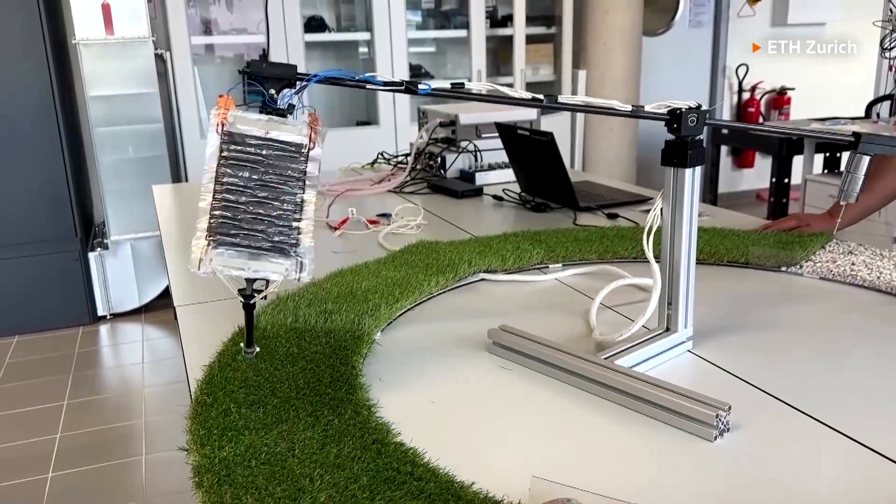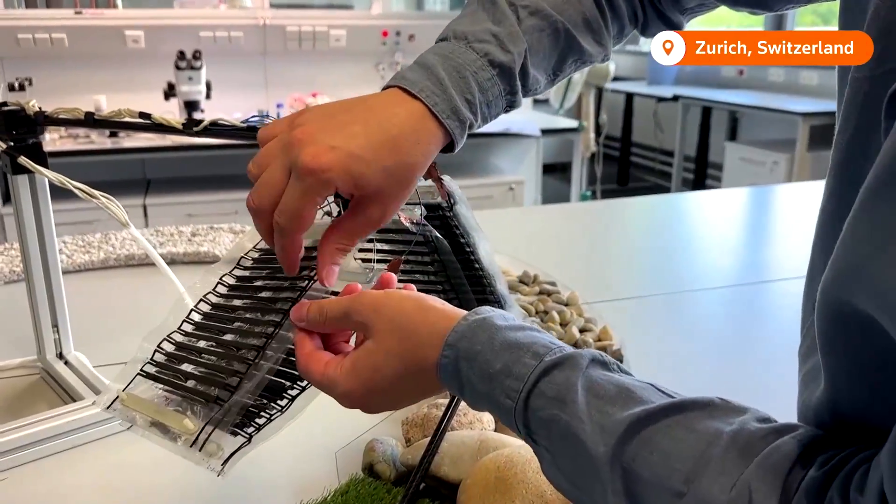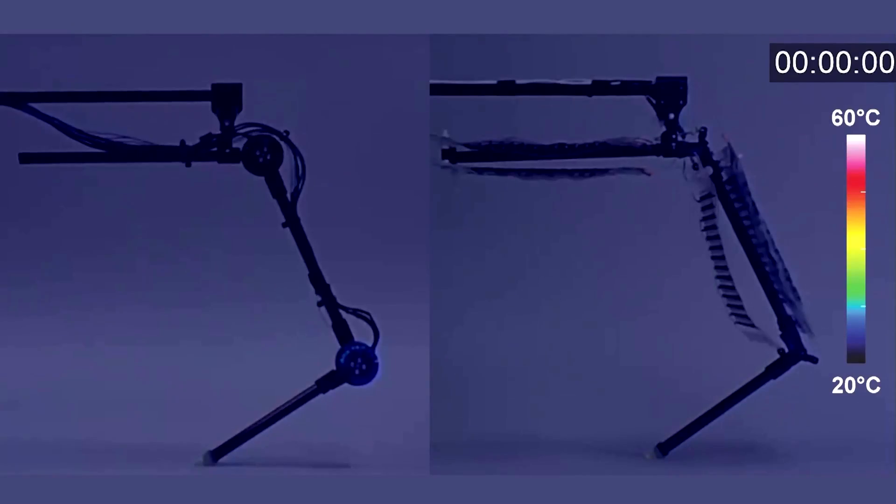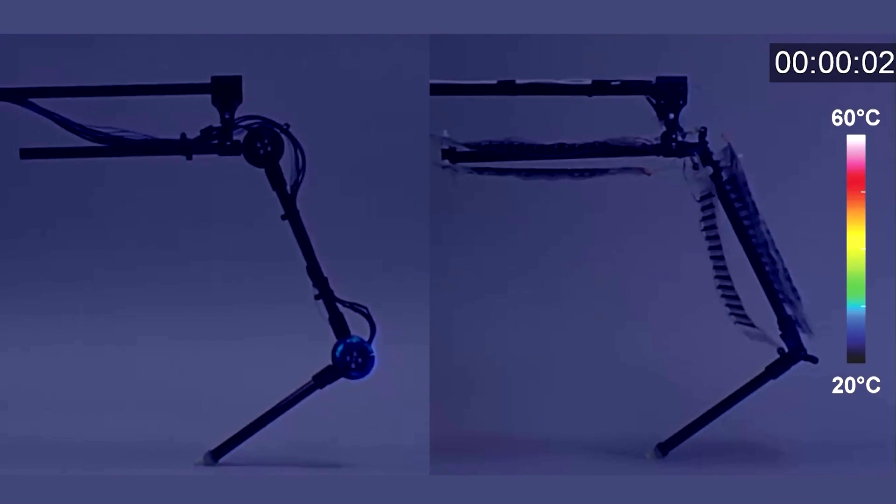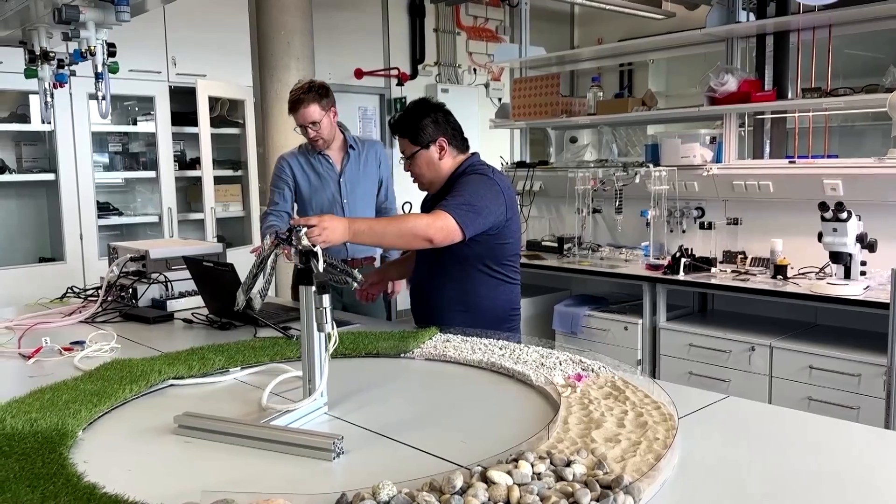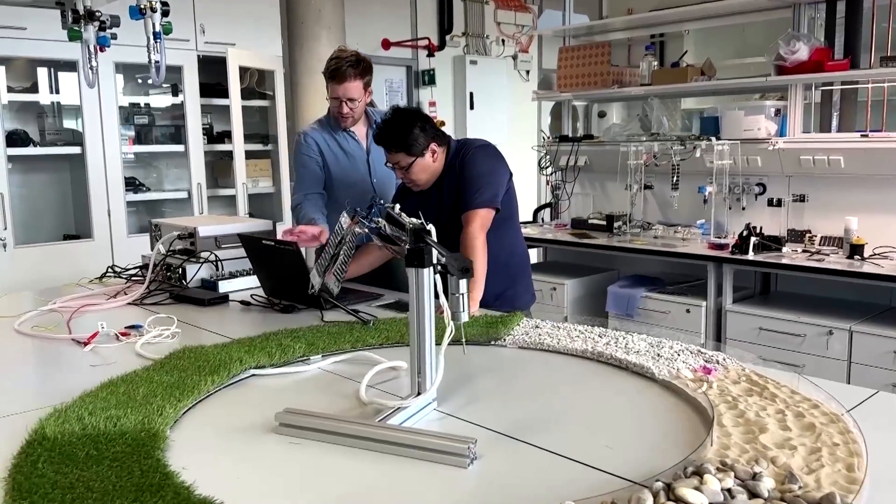So how does it work? The artificial muscles are oil-filled plastic bags with conductive black electrodes on the sides. When an electric charge is applied, the electrodes attract each other due to static electricity, pushing the oil to one side and shortening the bag.